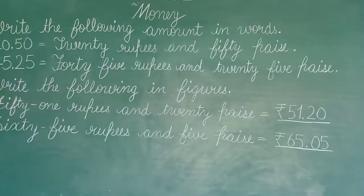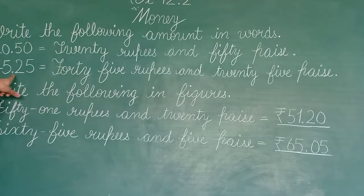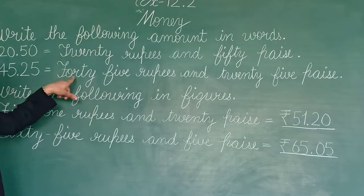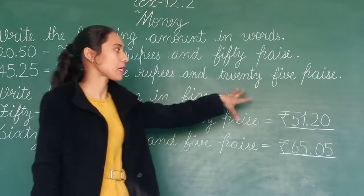Next is rupees 45.25 paise. Rupees 45.25 paise. Forty-five rupees and twenty-five paise.